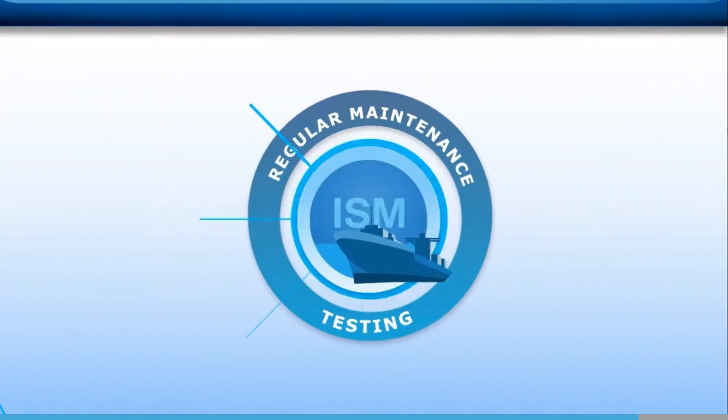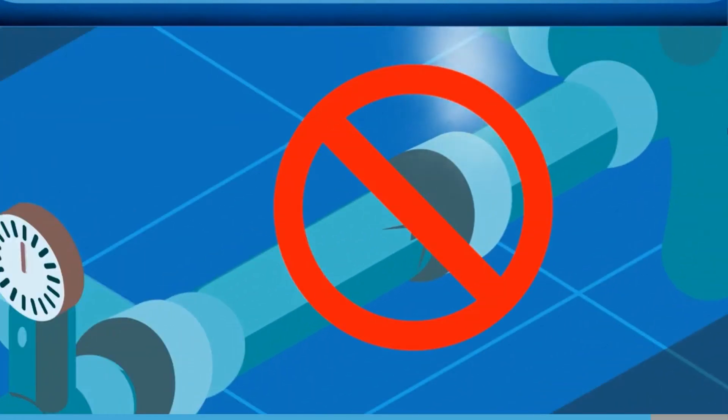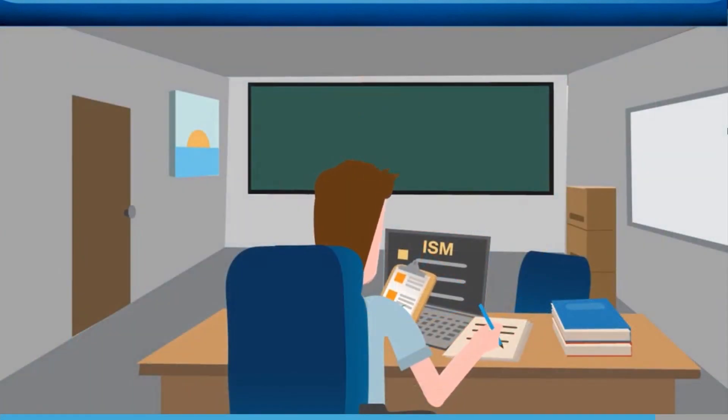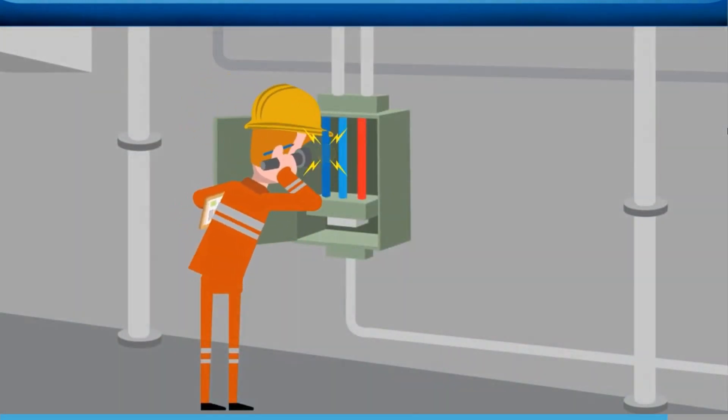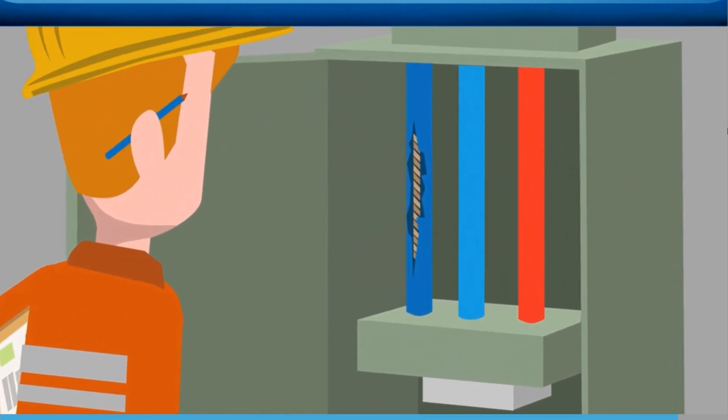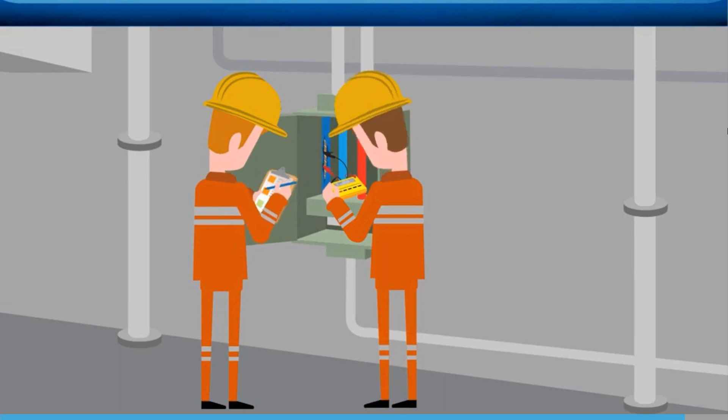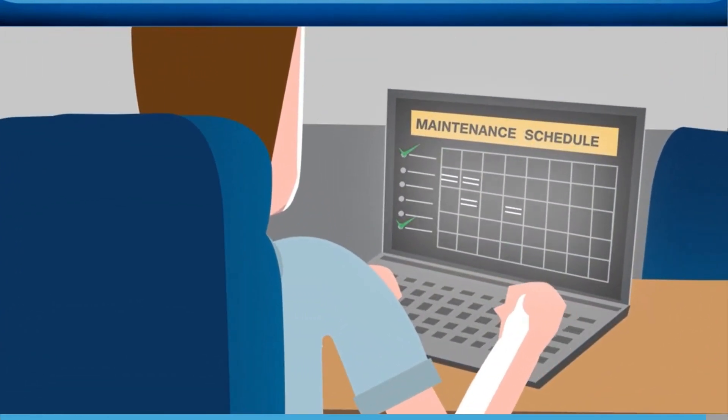The best ways to avoid equipment failure is through regular maintenance and testing. The ISM code requires the company to establish procedures to ensure that the ship is maintained in accordance with the relevant regulations and to identify equipment and technical systems that might cause a hazardous situation if it fails. This is often referred to as critical equipment. The SMS should contain measures to promote the reliability of such equipment or systems, including regular testing of standby arrangements and equipment or technical systems that are not in continuous use. The maintenance has to be planned, and most vessels today have a computerized maintenance system, which helps ensure important maintenance work or scheduled testing of critical equipment is not missed.